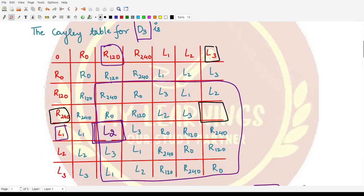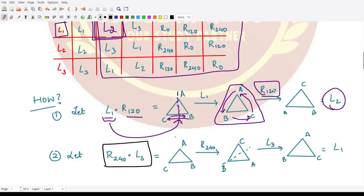On the usual triangle ABC, if we apply R240, we are shifting each element by 240 degrees. B would come to the position of C, C would go to the position of A, and A would go to the position of B. Now we have to apply L3 onto it.